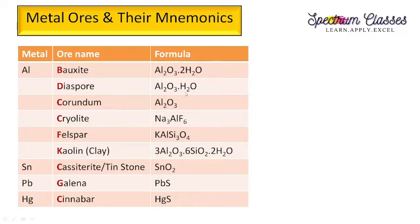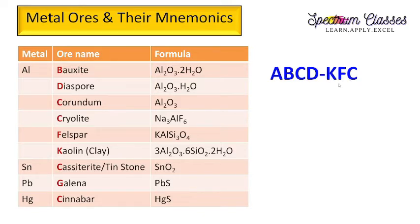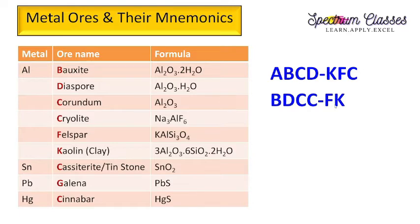The next group is aluminium, tin, lead, and mercury. For aluminium ores I have made a mnemonic like ABCD and KFC — you are very familiar with KFC, so it is easy to memorize. Here A stands for aluminium, so we know this is about aluminium ores. B relates to bauxite, C stands for corundum, and it is better to memorize this way because you can also relate the formulas.